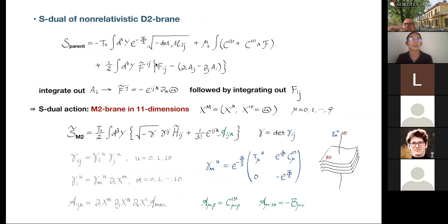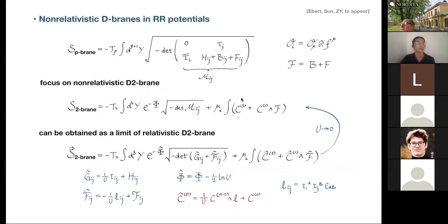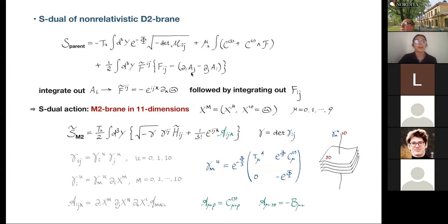We'd like to understand something about S-duality — which will eventually connect to M-theory. We perform an electromagnetic duality transformation called S-duality. Introduce a Lagrange multiplier F-tilde. Integrating it out imposes F = dA, and plugging that back gives our original D2-brane action. But instead, integrating out the gauge potential A gives a constraint equation for F-tilde.